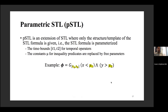We use parametric signal temporal logic (PSTL), which is an extension of STL where we only have a structure or template of the logic. We choose this because it gives us some sense about what the safety specification is — we know the template and try to learn the parameters of the STL in order to satisfy safety constraints. We assume we have some sense about the safety constraint, even if we don't know exactly what it is. Our goal is to find those parameters as RL interacts with the environment.